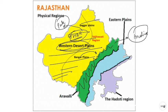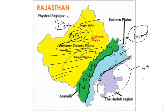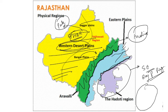The Aravali Ranges are the example of the oldest folded mountains present in India. Moving further east, we find the Eastern Plains, formed by the rivers, streams and all that flow through Rajasthan. This is called the Eastern Plain of Rajasthan. And lastly, there is the Hadauti Region, or the Southeast Rajasthan Plateau Region. This plateau region is a part of the greater Deccan Plateau — it is part of the Deccan Trap which is present in Rajasthan.